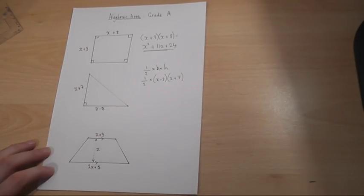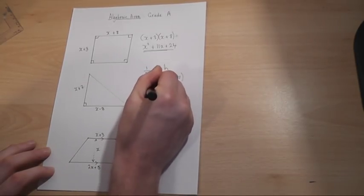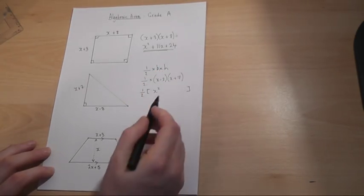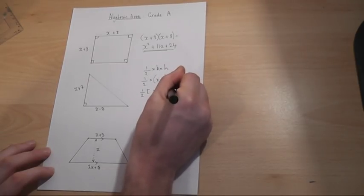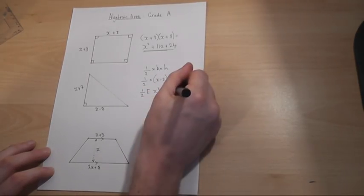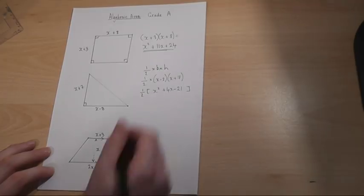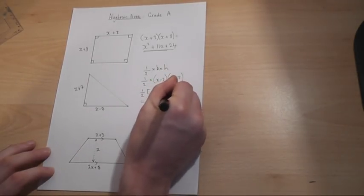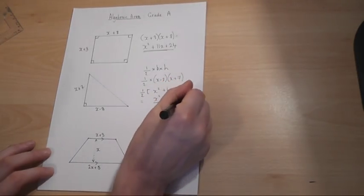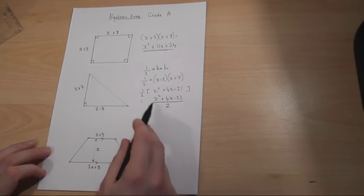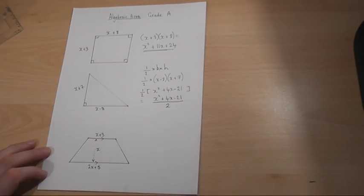The key here is to place brackets around the expression on the sides. Don't let the half put you off. We have to work out the bracket part first. We know that if we expand this we get x² + 4x - 21. And to keep this simple, all we need to do is to write the bit in the bracket and place it all over two. Remember, the half just comes from the formula for the area of a triangle.